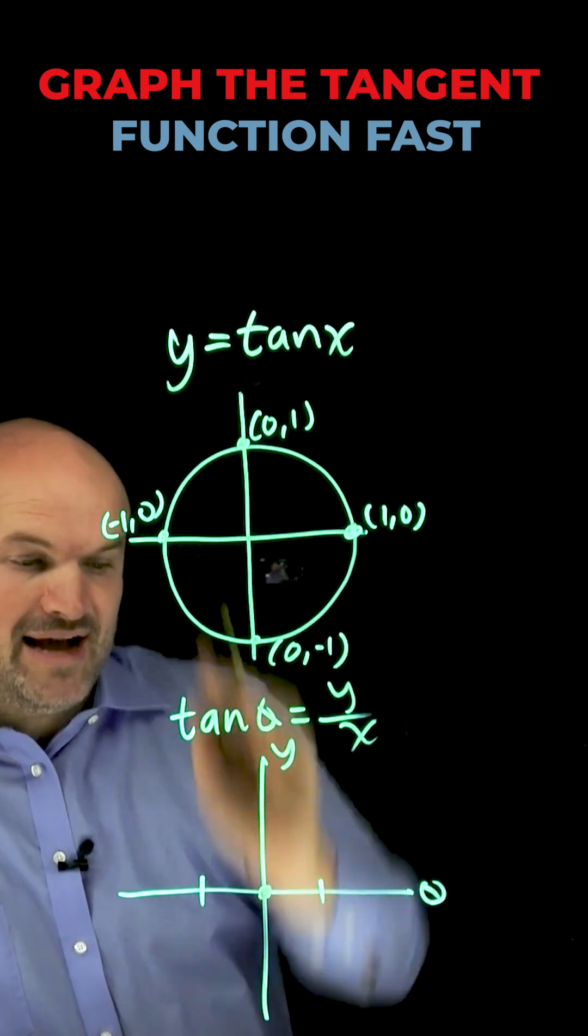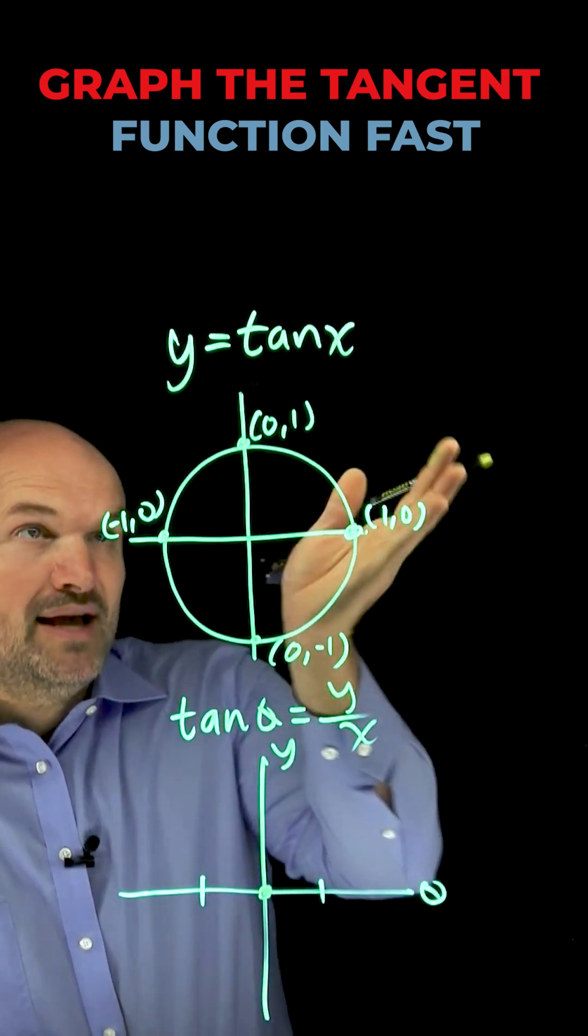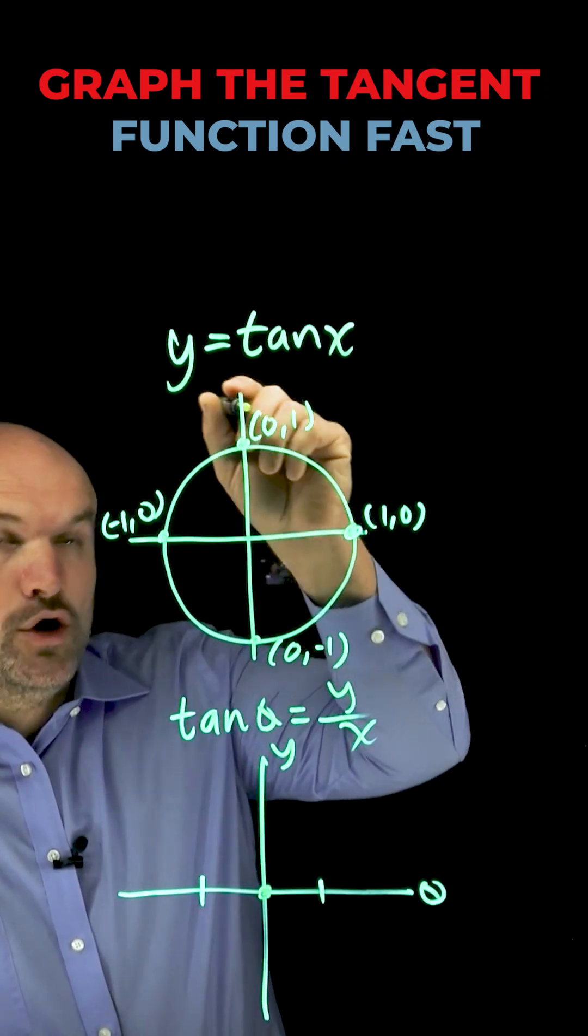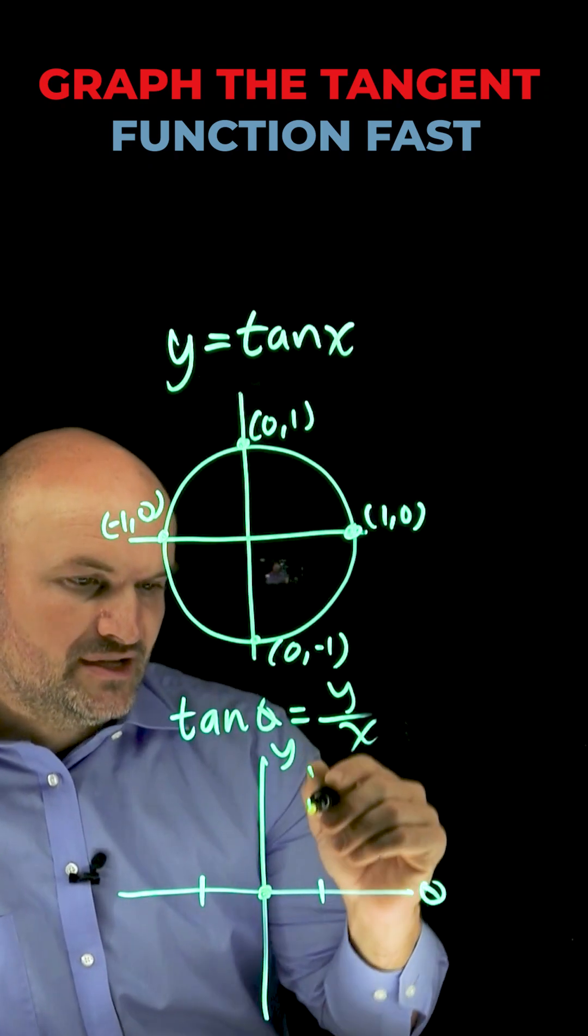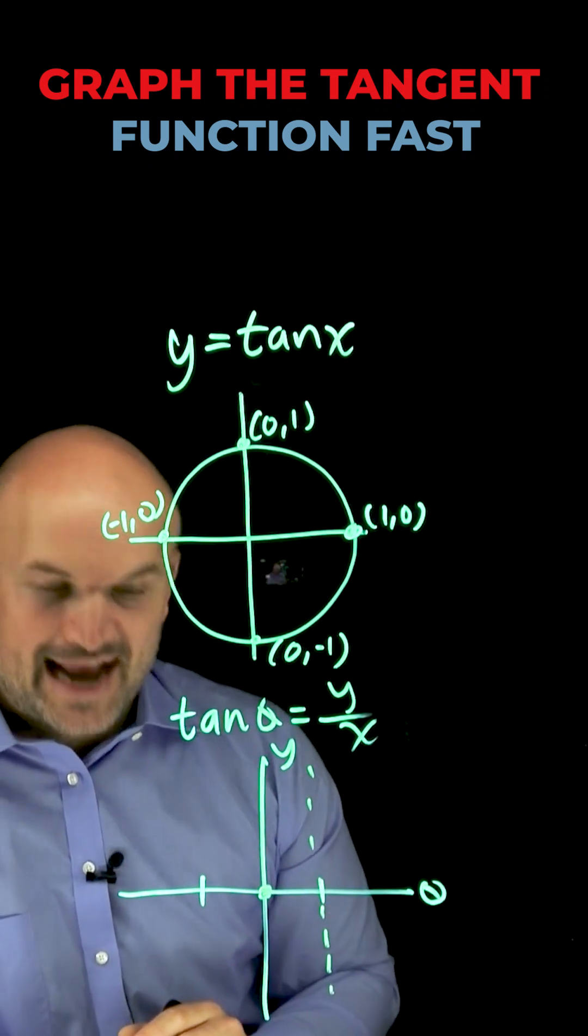Now let's work to π/2, which is the next positive angle. At π/2, I have one over zero as my y over x. You can't divide by zero, so that's an undefined value which we represent as an asymptote.